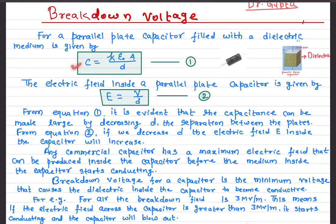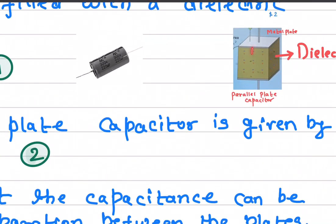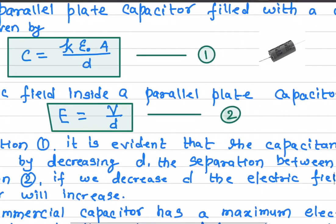The capacitance for a parallel plate capacitor is given by this equation. The electric field inside the capacitor is given by this formula, where V is the potential between the plates and D is the distance. As you can see, if we change the distance the capacitance will change — by increasing the distance the capacitance will go up. Similarly, if we decrease the distance the electric field inside the capacitor will go up as well.